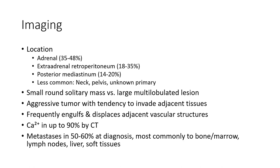On imaging, location: adrenal in approximately 48%; extra-adrenal retroperitoneum in 18 to 35%; posterior mediastinum in 14 to 20%; less common locations include neck and pelvis; unknown primary also occurs. Appearance ranges from small round solitary mass to large multi-lobulated lesions. It is an aggressive tumor with tendency to invade adjacent tissue, frequently encasing and displacing adjacent vascular structures.